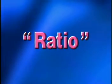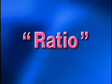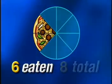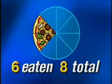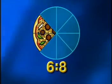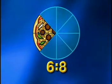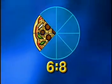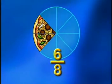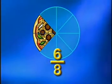Now let's look at ratios. A ratio is a comparison of two quantities by division. Because we know that Norbert ate six slices of pizza from the total number of slices eight, we would write this ratio as six eaten to eight total. Ratios can also be written as fractions, like this: six over eight.